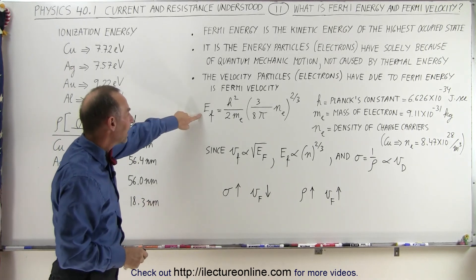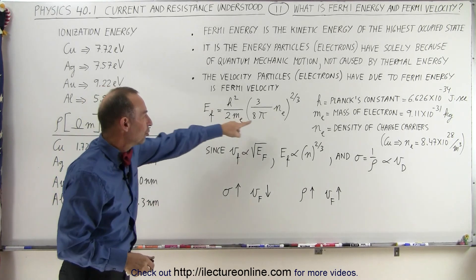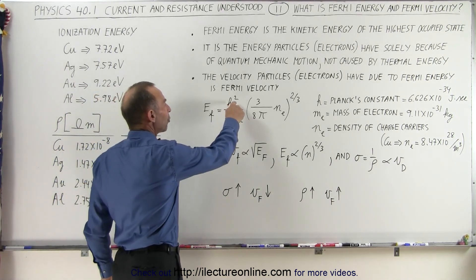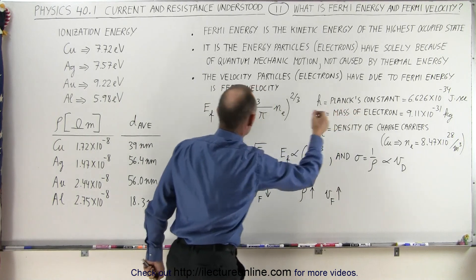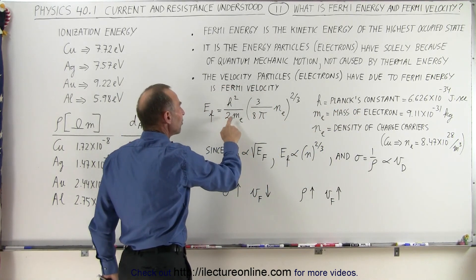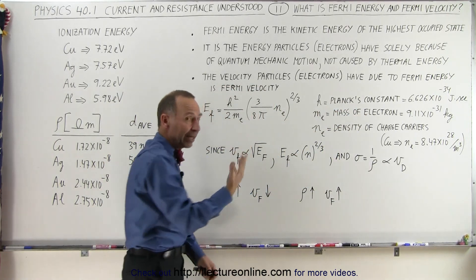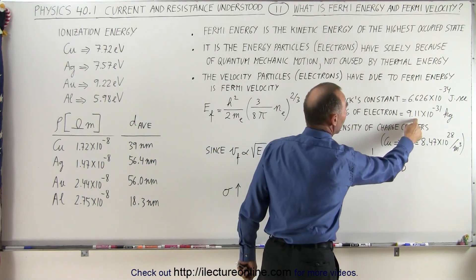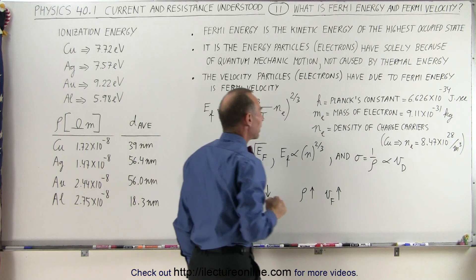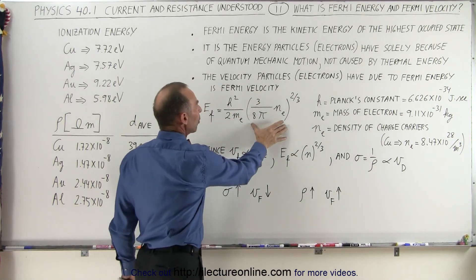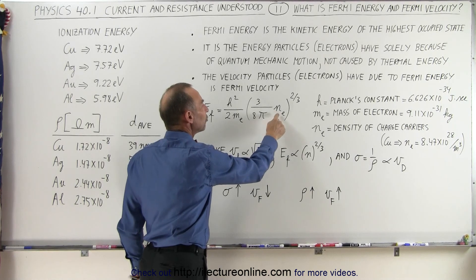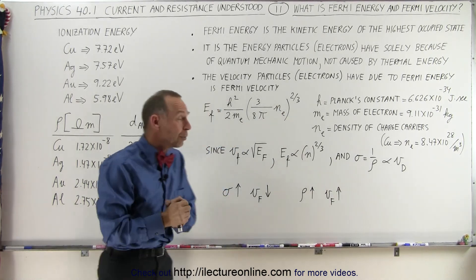We can calculate the Fermi energy using this equation right here. First of all, it's h squared, where h is Planck's constant, divided by twice the mass of the particles, in this case electrons, and the mass of an electron is 9.11 times 10 to the minus 31 kilograms, times this quantity 3 divided by π times n_e to the two-thirds power.